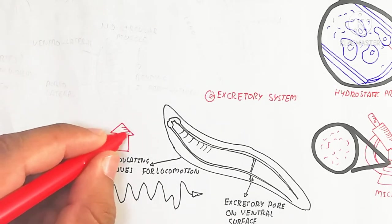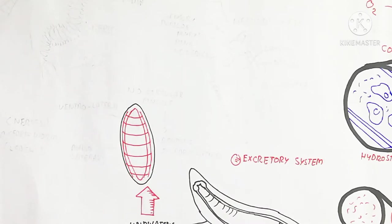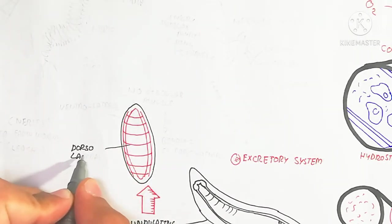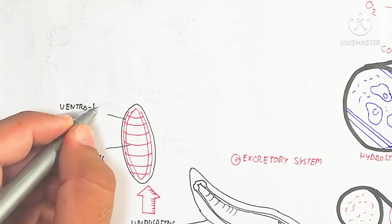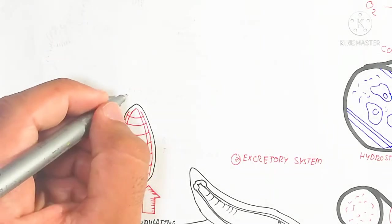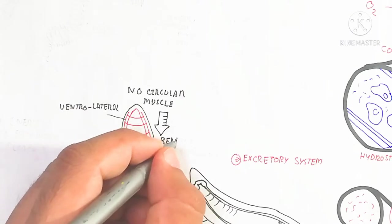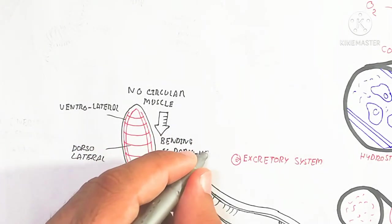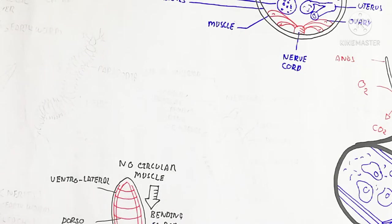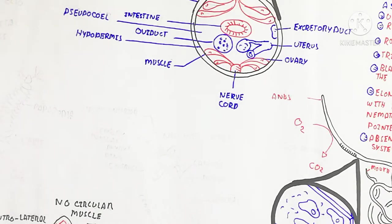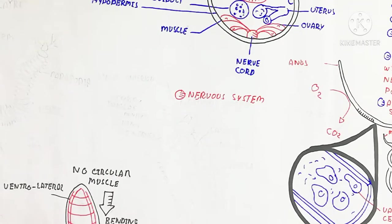The excretory pore is on the ventral surface. Undulating waves are used for locomotion. The nematode moves like undulating waves because it lacks circular muscles. The ring-like movement differs from earthworm movement. Antagonistic longitudinal and circular muscle contraction and relaxation is not present here. There is no circular muscle, and bending is dorsal-ventral, with dorsal-lateral and ventral-lateral muscles producing undulating waves that cause movement.